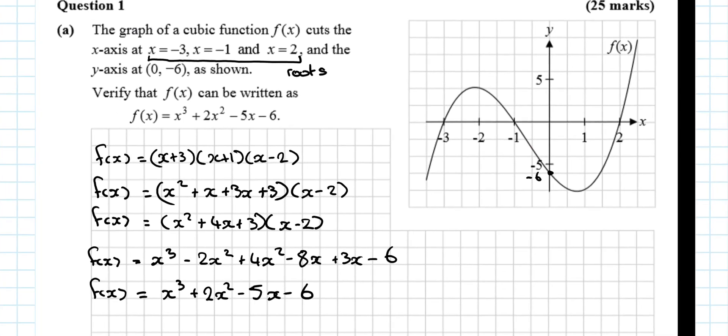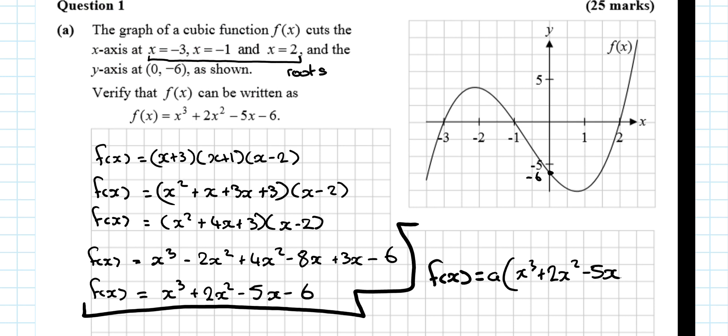Now, sometimes when we multiply these out, we'll find that the constant at the end is not the same as the y-intercept. In that case, you want to be very careful. Okay? So, yes, that's the first part of the question. That's it done. But if the y-intercept was not the same as our constant, in this case, the known point is 0 minus 6.